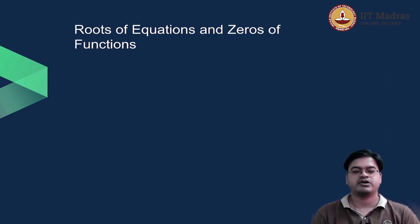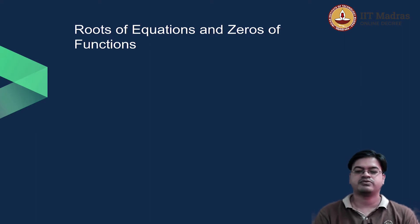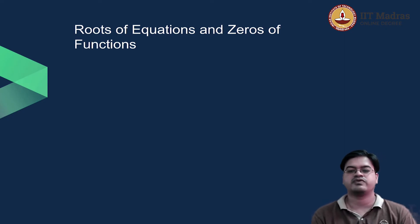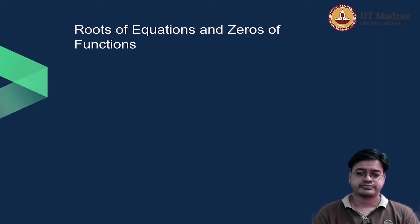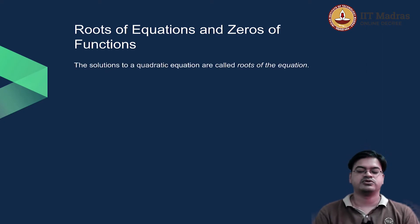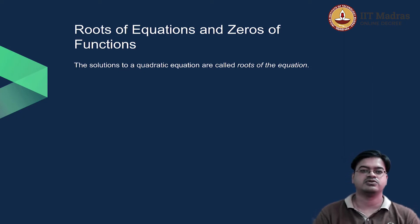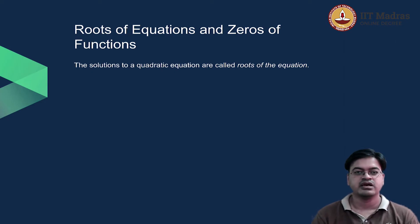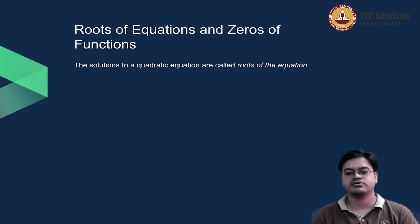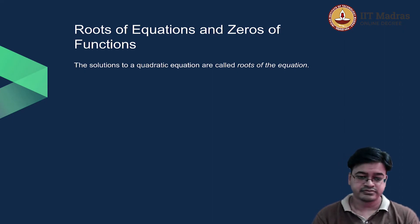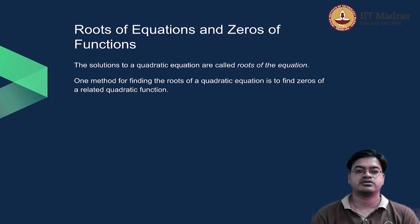Once we have a quadratic equation in standard form, we can discuss the roots of the quadratic equation or zeros of the function, and we will see how the concept of roots of a quadratic equation and zeros of a quadratic function are related. The solutions of the quadratic equation are called roots of the equation. If ax² + bx + c = 0, then the value of x that gives 0 is called the root of the quadratic equation.